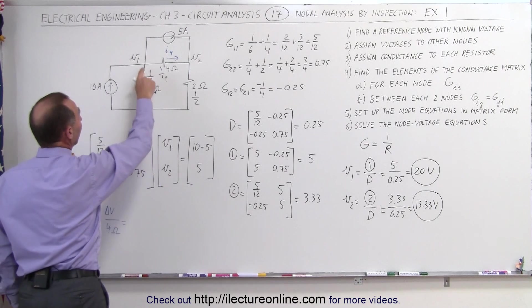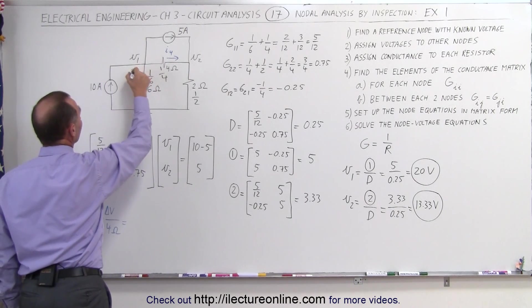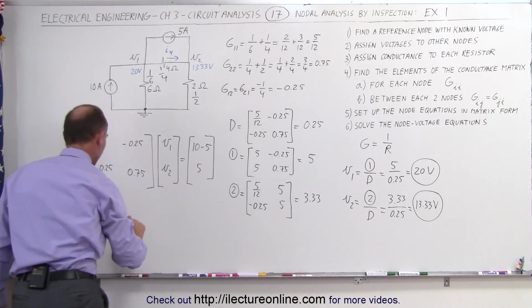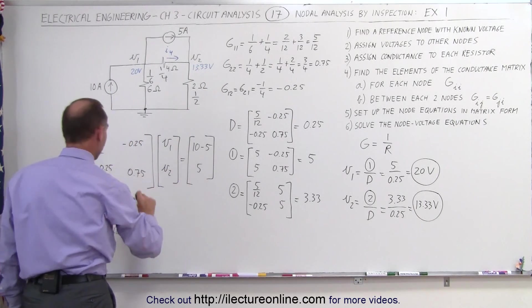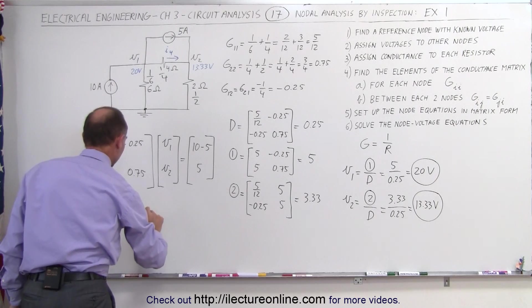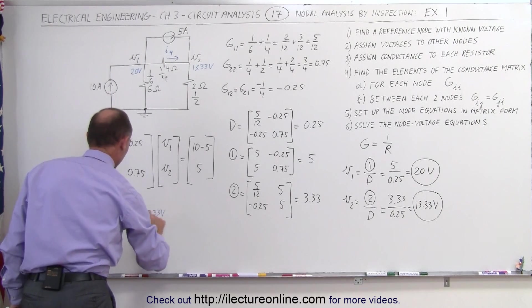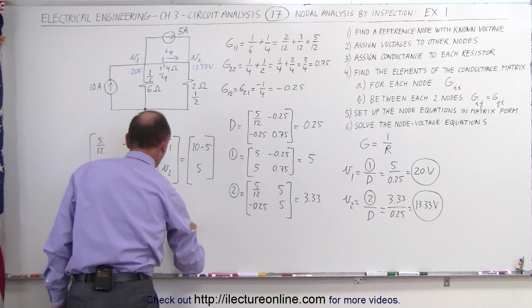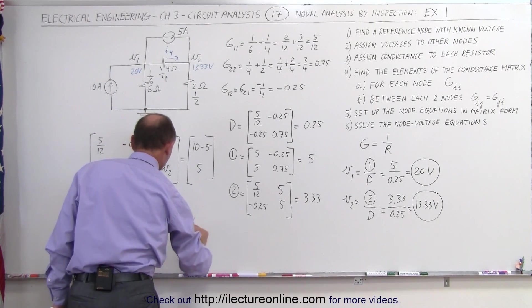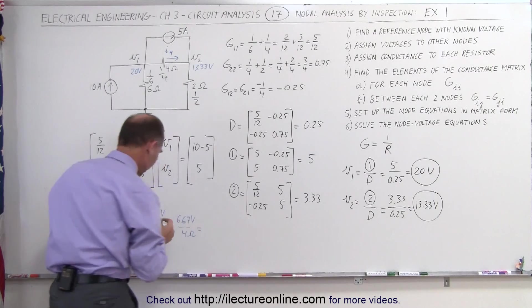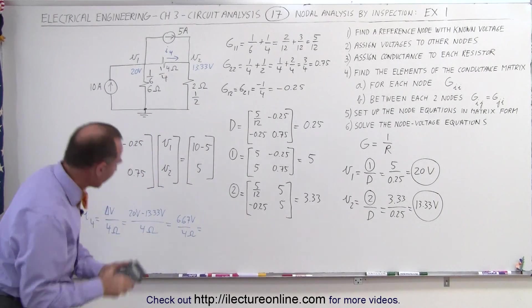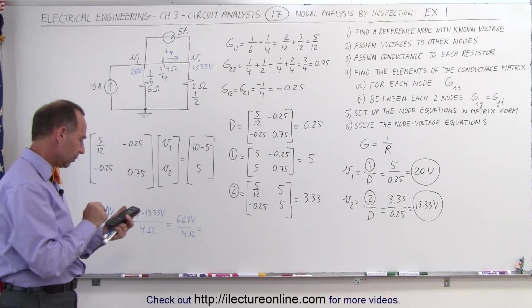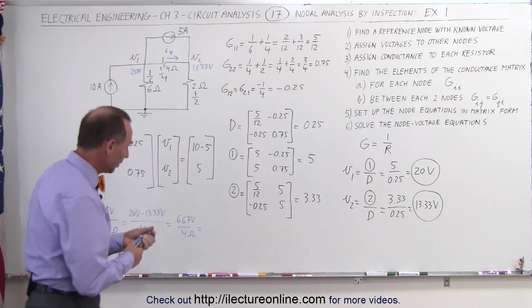Notice that we have 20 volts over here. We have 13.33 volts over there, which means the difference here would be 20 volts minus 13.33 volts divided by 4 ohms, which is equal to 6.67 volts divided by 4 ohms, which is equal to 1.67 amps.